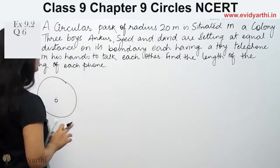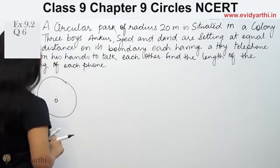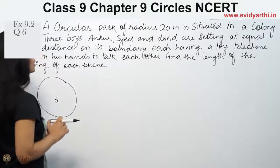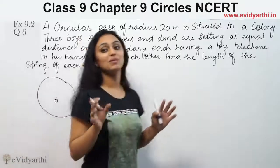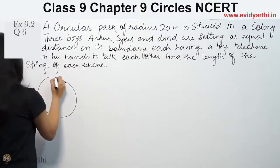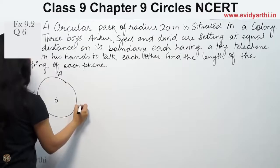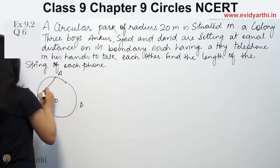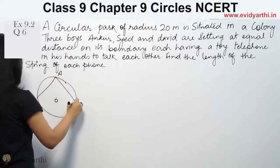It says three boys Angur, Sayyad and David are sitting at equal distance on its boundary, each having a toy phone in his hand to talk to each other. So here we are basically telling you that there are three boys - Angur, Sayyad and David. These three are at equal distance with toy phones.